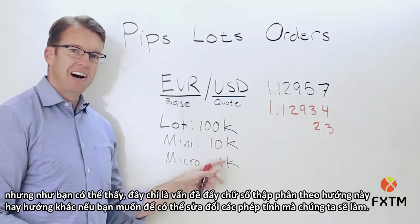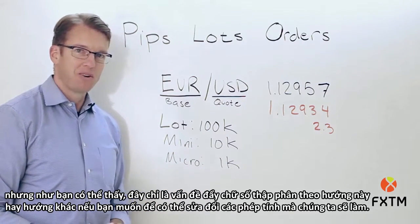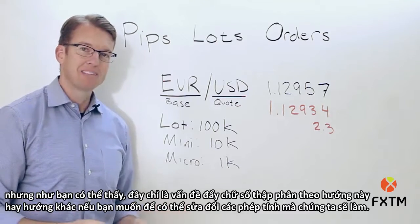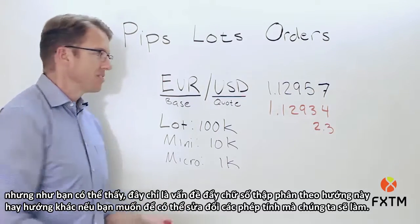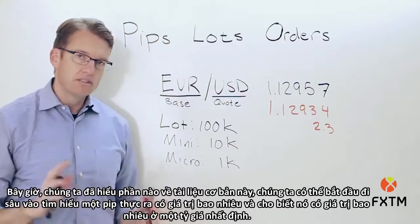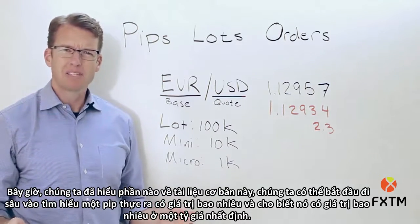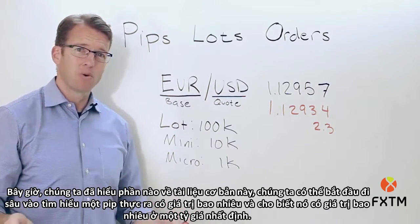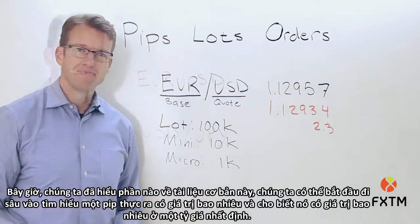We're going to be sticking with regular lots in this video series to keep the math easy, but as you can see, modifying the calculations for mini or micro lots is merely a matter of shifting the decimal place one direction or the other. Now that we understand the basic material, we can dig into how much a pip is actually worth and how to tell its value given a particular exchange rate.